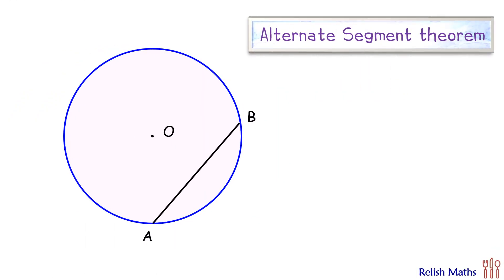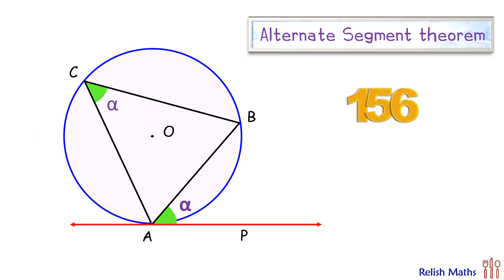To solve this question we'll use alternate segment theorem, which states that in a circle the angle formed between a chord and the tangent from one end of the chord, this angle alpha, will be same as the angle formed by the chord in the remaining part of the alternate segment. Proof of the theorem is provided in video number 156, for those interested I'll provide a link in the description.